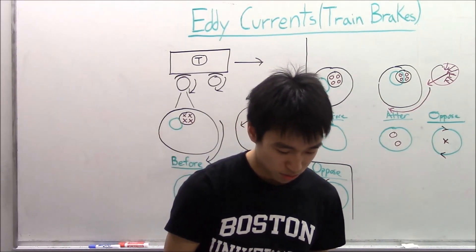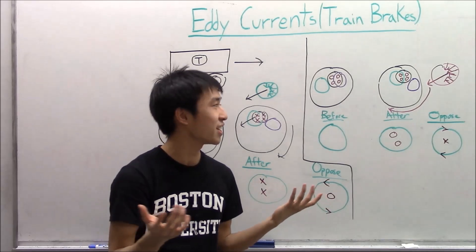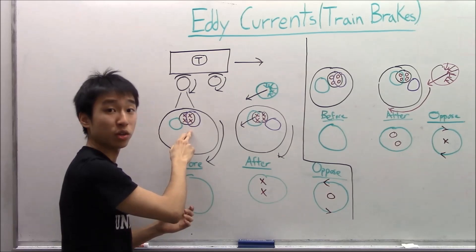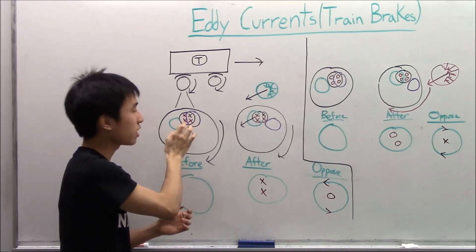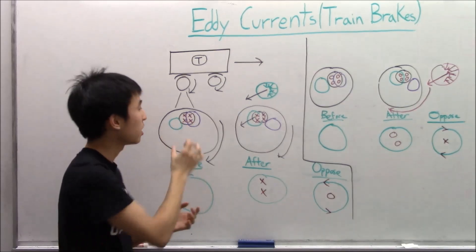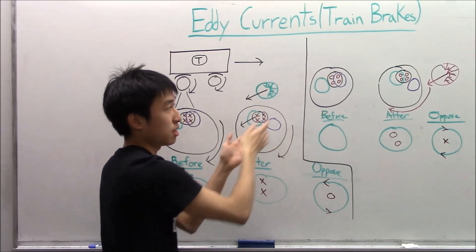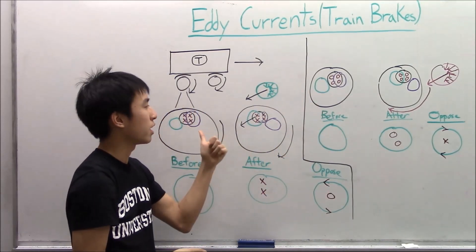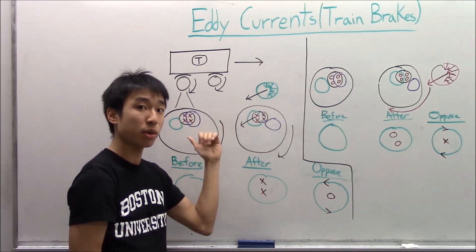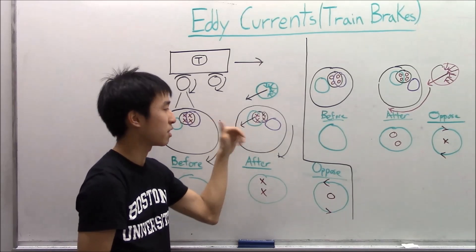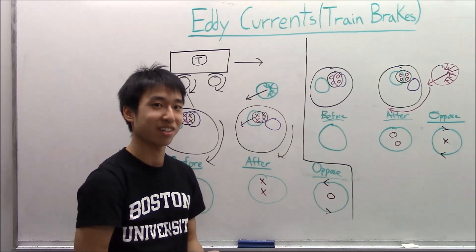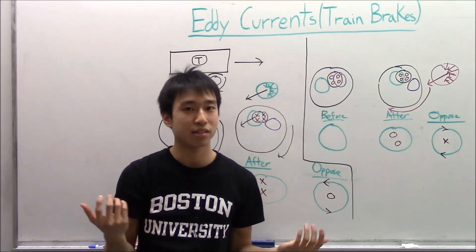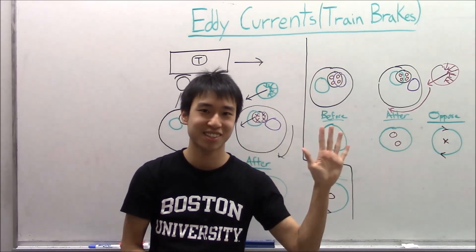Okay, so that's basically it. If you want extra practice, try the situation where a portion of your wheel starts inside the magnetic field and then exits it. In both cases, are you still going to get a force opposing the rotation, or will it now help the rotation and speed up the train? Try that out, and if you're unsure whether you got the right answer, ask on Piazza and we'll get back to you. See you guys in class.